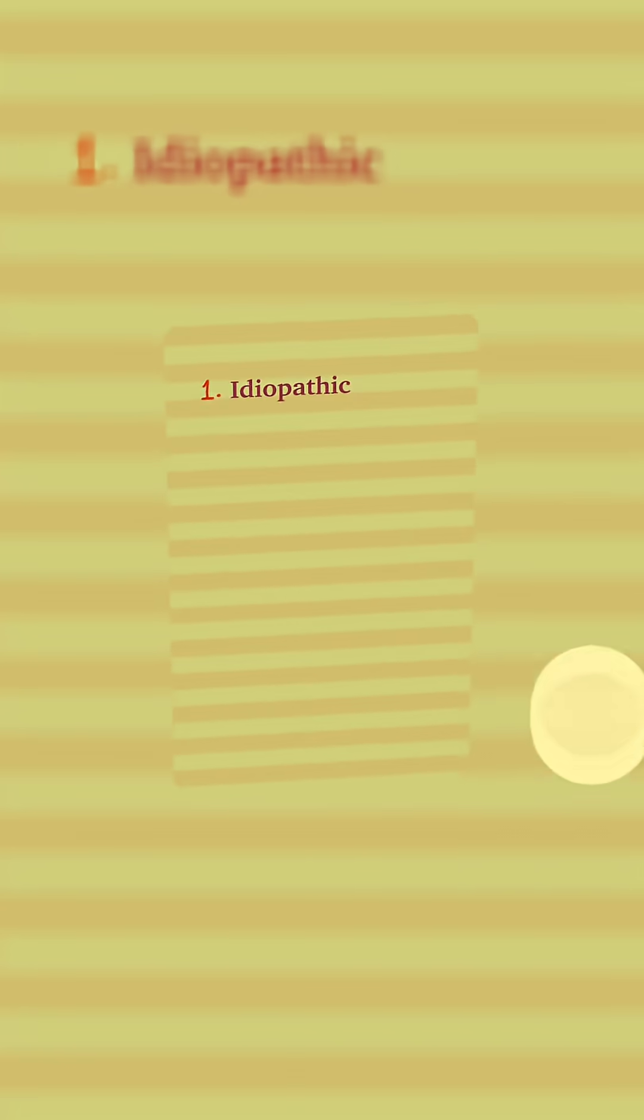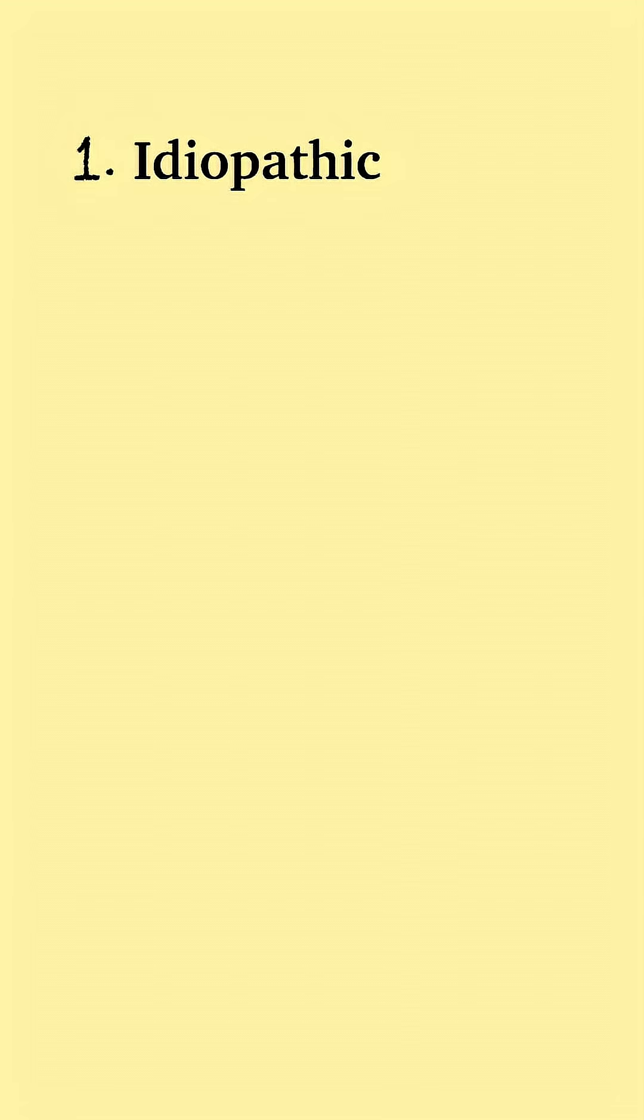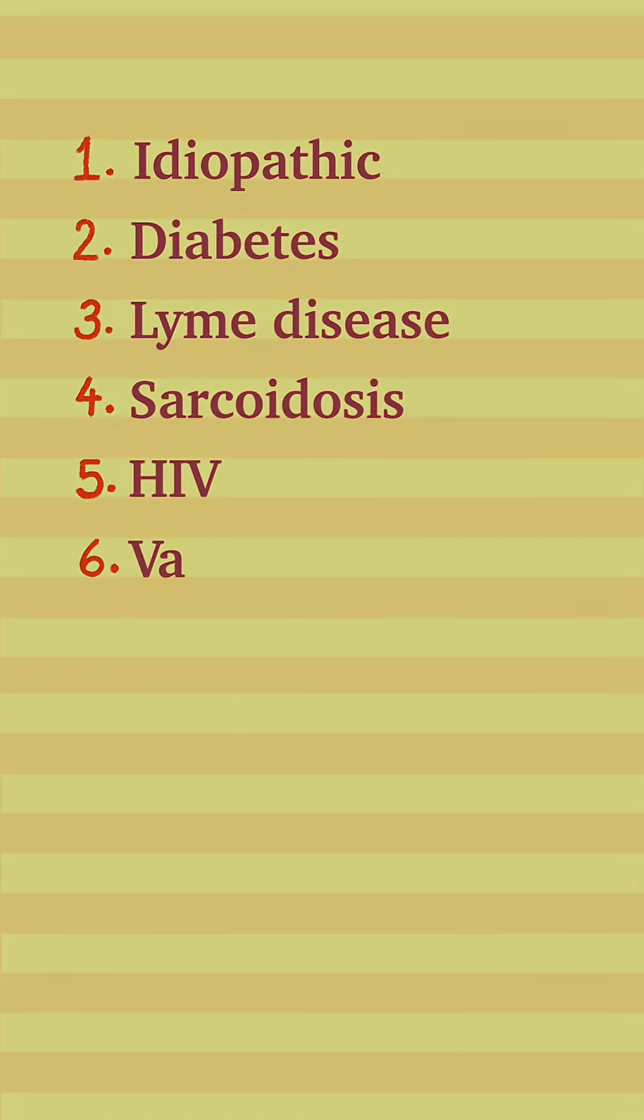What is the cause of Bell's palsy? The number one reason is idiopathic, meaning we really don't know why it happens. The next few are things like diabetes, Lyme disease, sarcoidosis, HIV, vasculitis, and cancer.